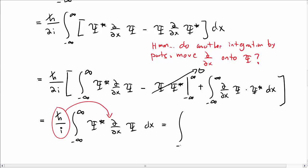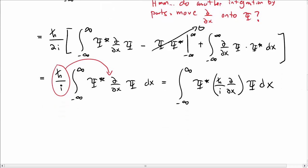It's conventional to move the h bar over i inside so that I get something that looks like psi star h bar over i d by dx times psi dx. And this is usually what we then call the momentum operator. p hat is h bar over i d by dx. And so this is where the momentum operator came from in our earlier discussions.